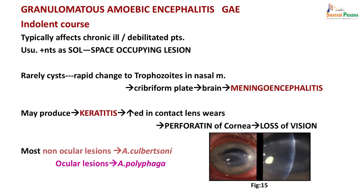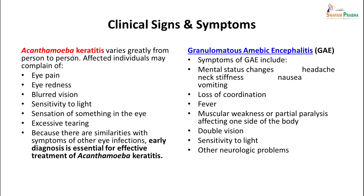Most non-ocular lesions are caused by Acanthamoeba culbertsoni, while ocular lesions are caused by Acanthamoeba polyphaga. Clinical signs and symptoms of Acanthamoeba keratitis vary greatly from person to person. The patient can have eye pain, redness, blurred vision, sensitivity to light, sensation of something in the eye, and excessive tearing. Because there are similarities with symptoms of other eye infections, early diagnosis is important. In granulomatous amoebic encephalitis, patients will have symptoms of mental status changes, headache, neck stiffness, nausea and vomiting similar to meningitis, but may also have loss of coordination, fever, muscular weakness or partial paralysis, double vision, sensitivity to light, and other neurological symptoms.